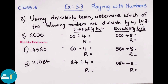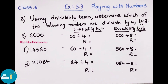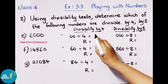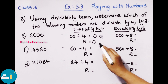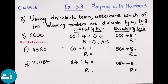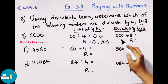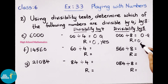Next number: 6,000. Checking divisibility by 4: last 2 digits are 00, which divided by 4 gives remainder 0 — it is divisible by 4. Checking divisibility by 8: last 3 digits are 000. Dividing 000 by 8 gives quotient 0 and remainder 0. Yes, 6,000 is divisible by 8.